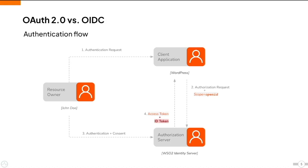There are two main additions to the basic OAuth2 flow when it becomes an OIDC flow. The first is the scope sent along with the authorization request — 'openid' is added as a value of scope and is the specific term used to denote an OIDC flow. On receiving this scope, the authorization server knows it is an OpenID Connect request and, in return, sends an ID token along with the access token to the client application.